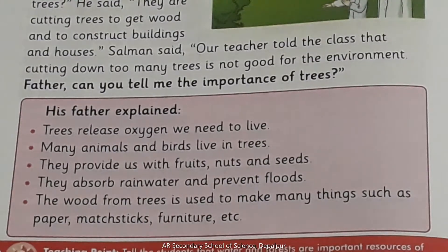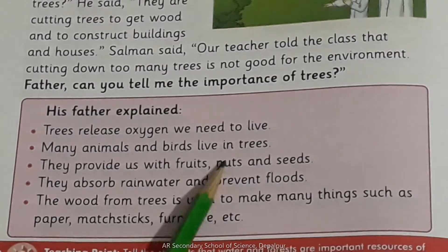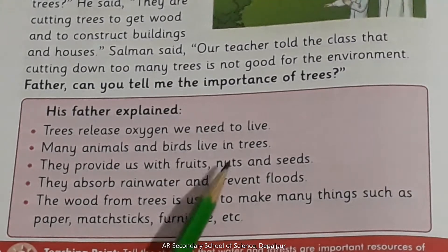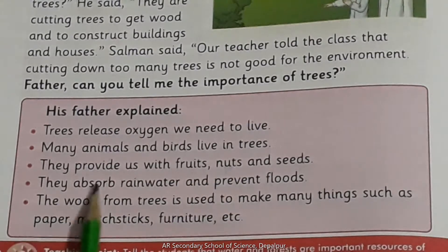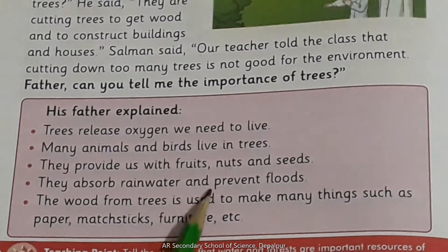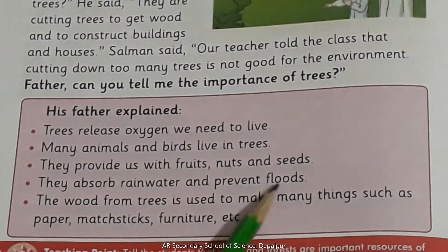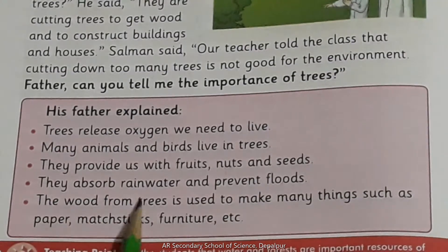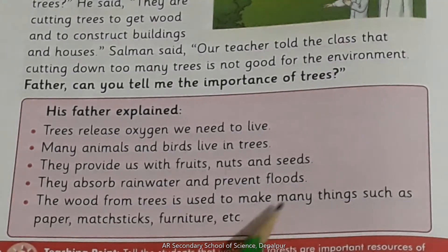They provide us with fruits, nuts, and seeds — یہ ہمیں پھل، nuts اور seeds فراہم کرتے ہیں۔ Nuts means سخت چھلکوں والے میوے جیسے بادام، اخروٹ، مونگ پھلی وغیرہ۔ They absorb rain water and prevent floods — یہ پانی کو جذب کرتے ہیں اور سیلاب سے بچاتے ہیں۔